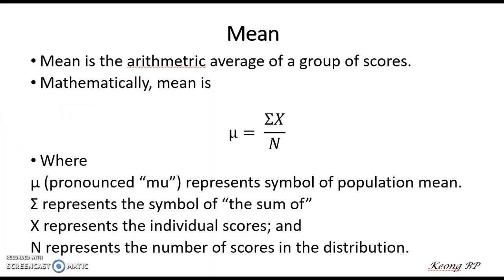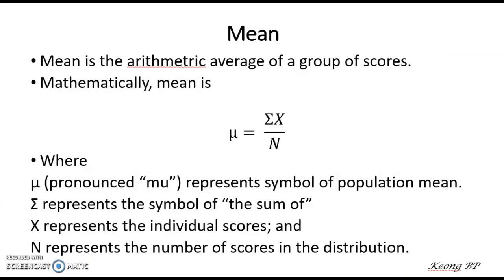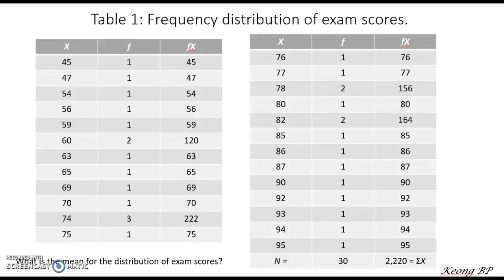Mean is basically calculated by the sum of scores over the number of scores in the distribution. Now let us look at one example of how to calculate the mean. You can pause the video for a while to calculate the mean using this formula. After you have correctly obtained the value of the mean, you can continue.